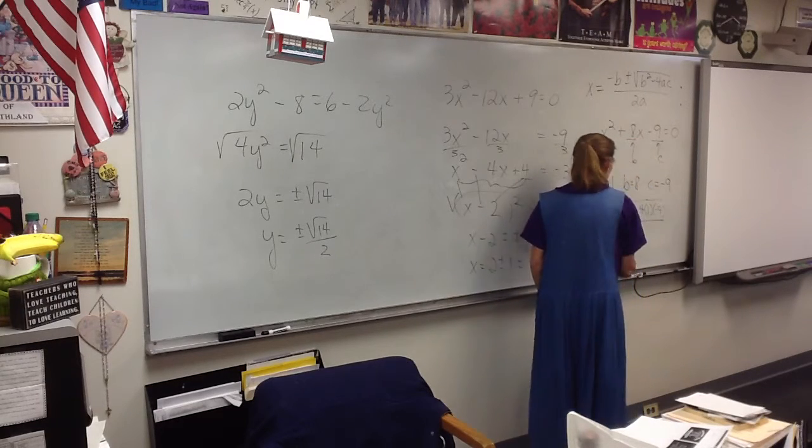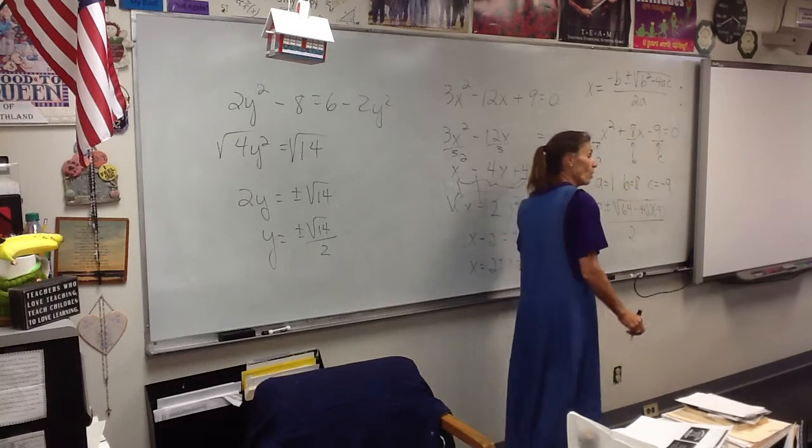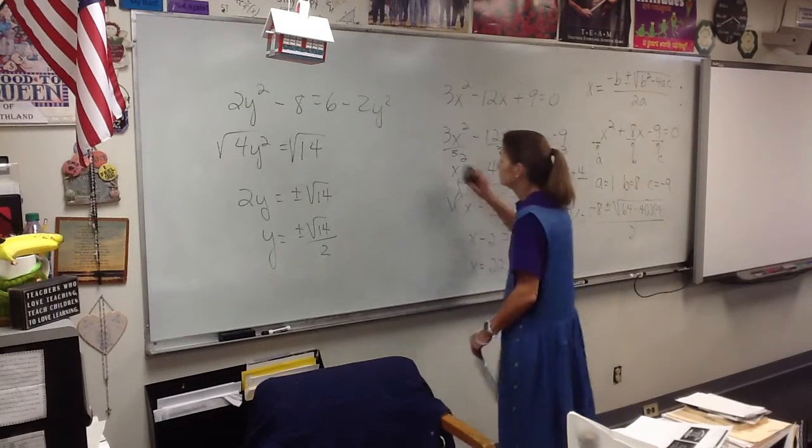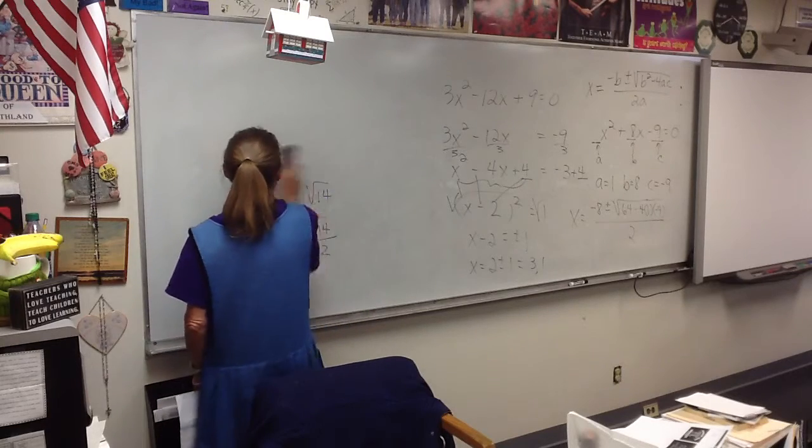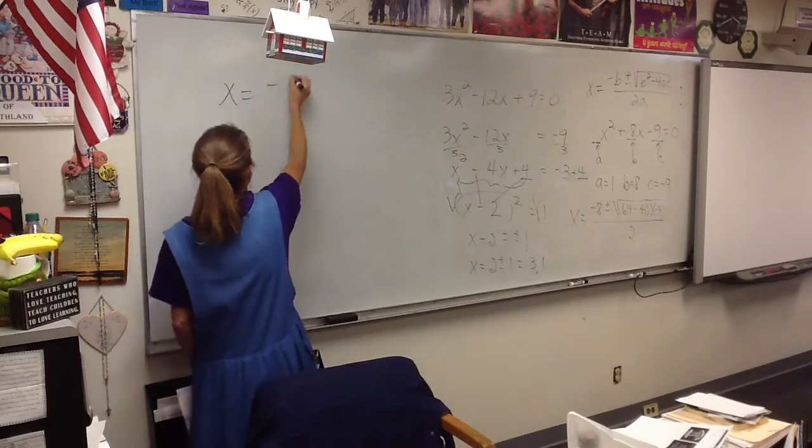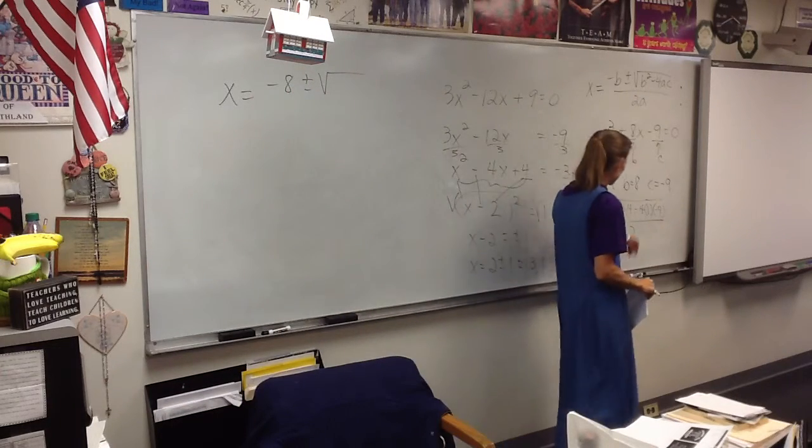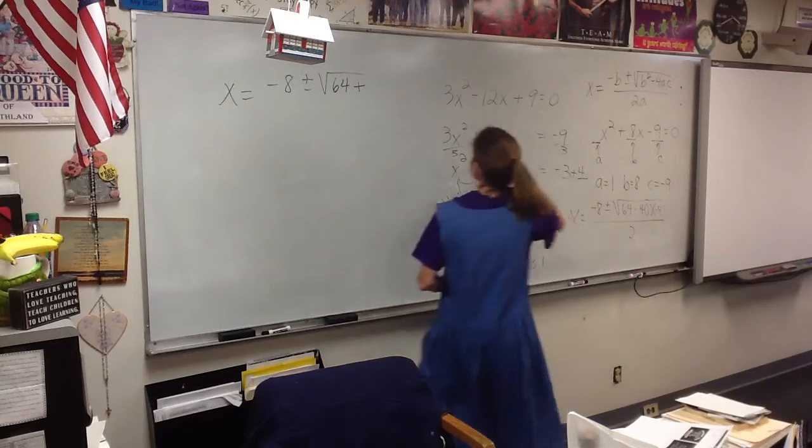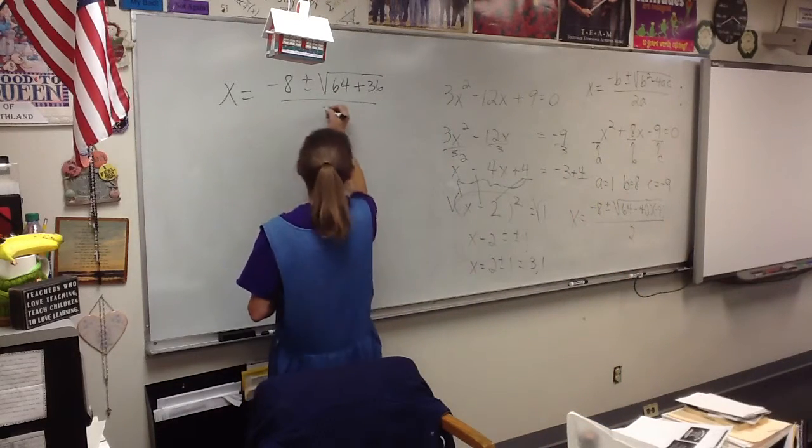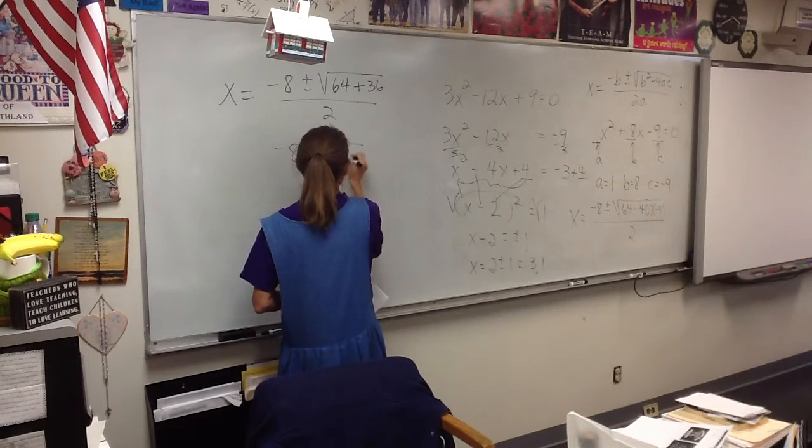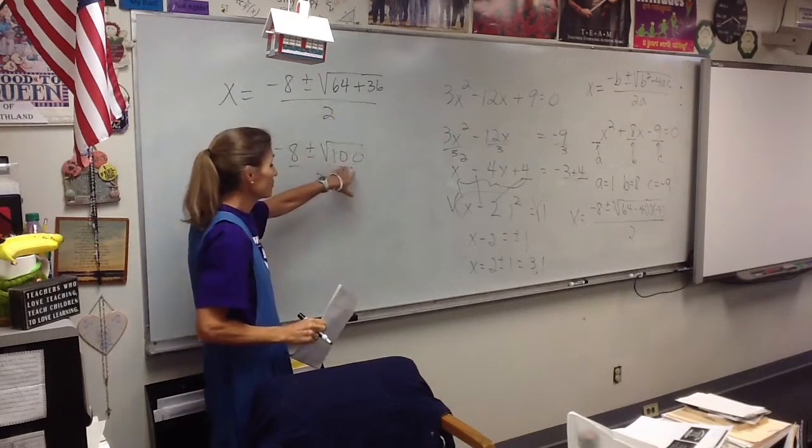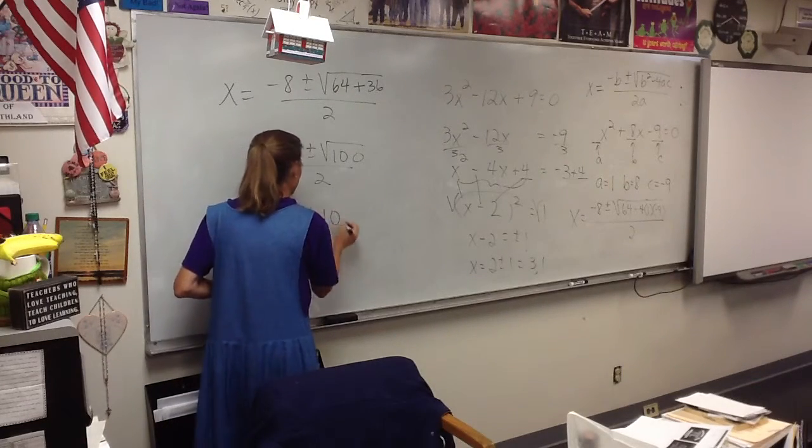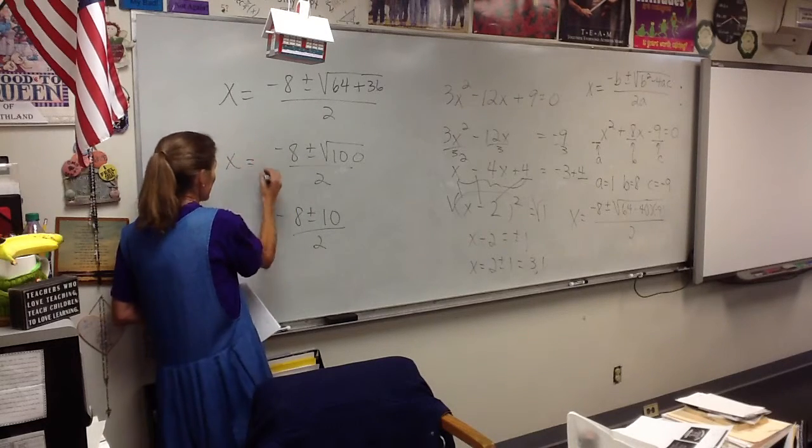So X equals, here we go, negative 8 plus or minus the square root of 8 squared, which is, I'm going to go ahead and write 64, is that okay with everybody? Minus 4 times A times C, and Moses, I would recommend writing this down because sometimes if we try to do it all in our head, we end up losing a sign somewhere, okay? X equals negative 8 plus or minus, what do I got under here? I've got 64, that's going to end up being plus, isn't it? 36. So negative 8 plus or minus, oh that's nice. Did you get 100 under here? And of course the square root of 100 is 10.